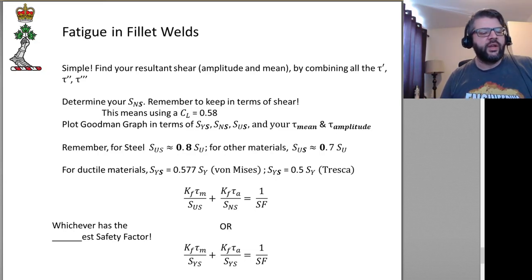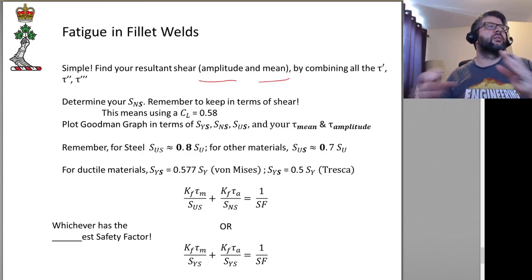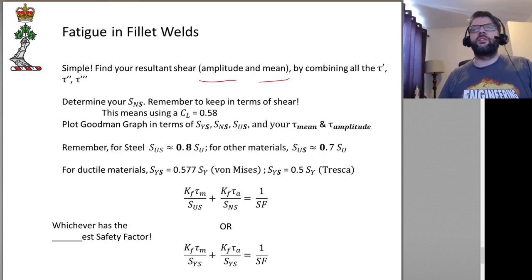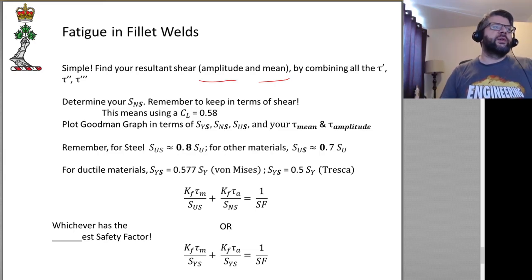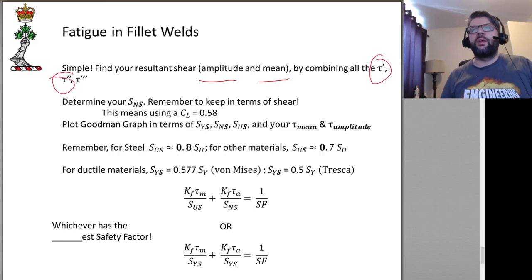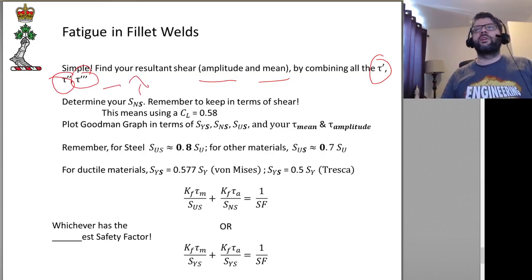For fatigue, we basically do the same calculations — we just do them separately for the amplitude and the mean of our load. If we have a load that fluctuates, break that fluctuating load into its amplitude component and its mean component, plug those in for tau-prime, tau double-prime, and tau triple-prime, and that gives us a tau amplitude and a tau mean.